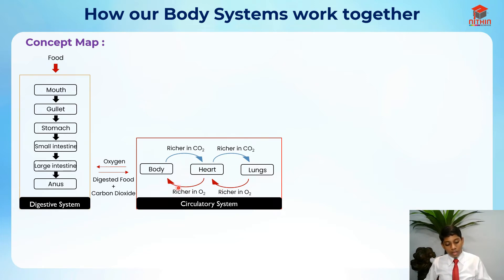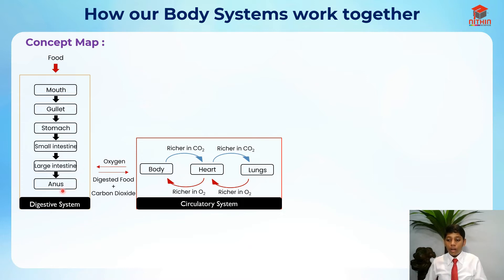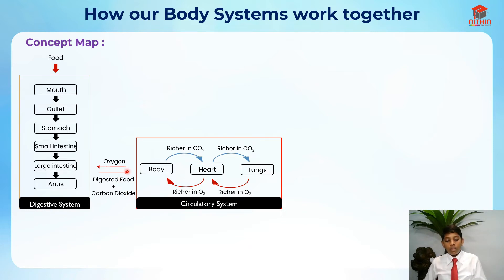So after the heart the blood has lesser oxygen. Now to the body: the circulatory system delivers oxygen, and the digestive system gives digested food. Carbon dioxide is produced because you need oxygen and digested food to respire in order to give out carbon dioxide and energy. Since the digestive system gives us digested food, we factor that into respiration.